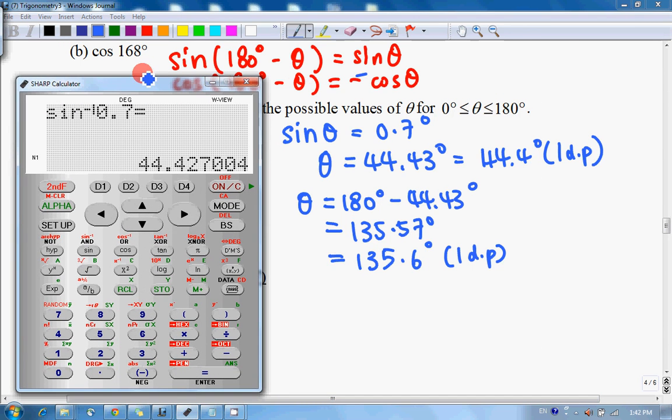If you take a look and check the answer, sin(44.4°) gives 0.69966334, which is close to 0.7. If I have sin(135.6°)...